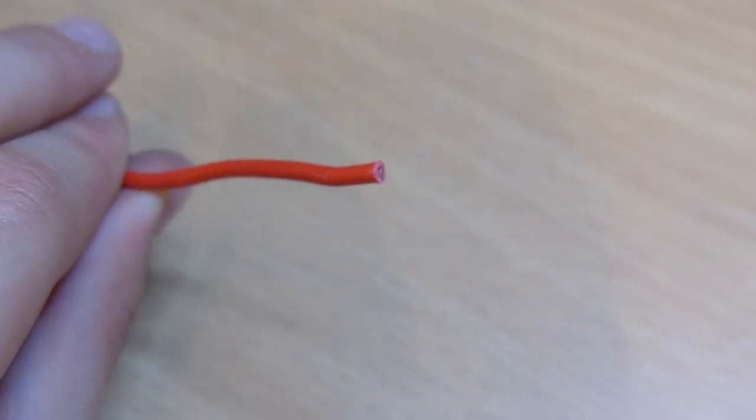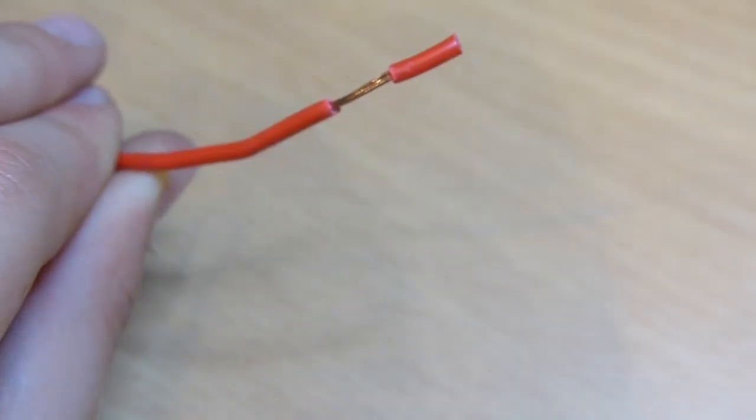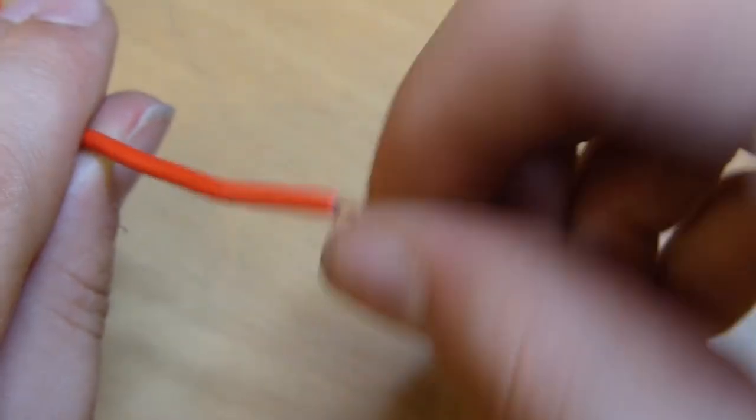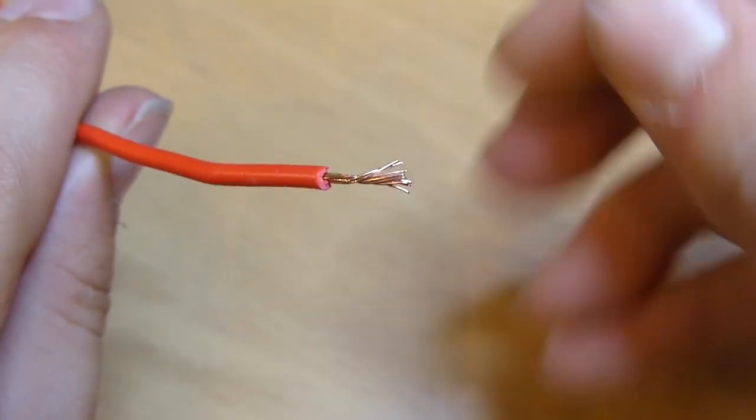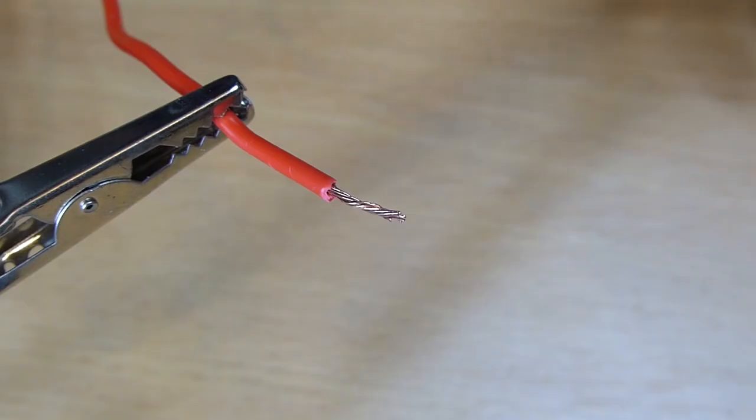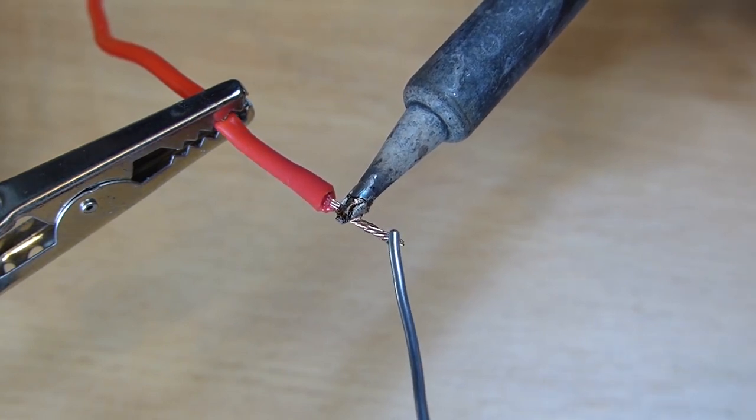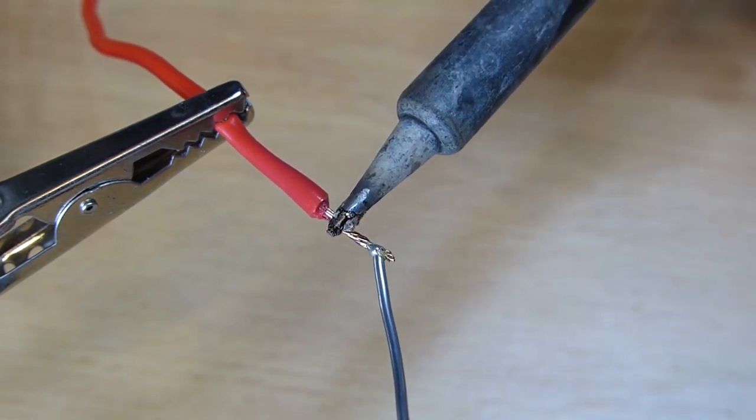Take your positive wire and strip the end about 8mm to reveal the bare wire. If it is multi-strand wire, you will need to twist the strands together and then tin it. Tinning is done by melting a little bit of solder onto the end of your soldering iron and then pressing it against the wire to heat it up. After about 5 to 10 seconds, press the solder against the strands to melt it into the wire.